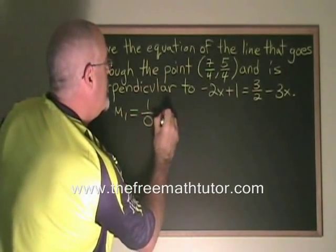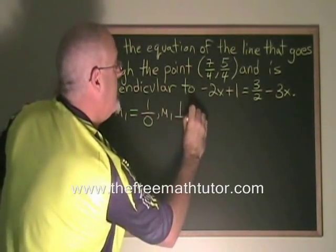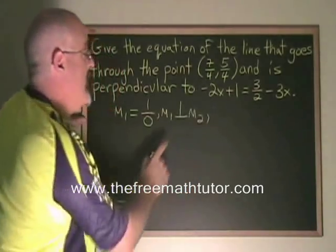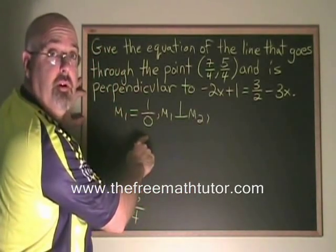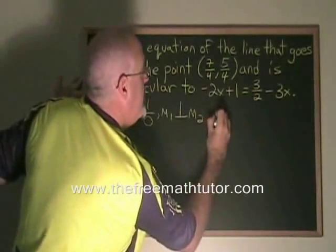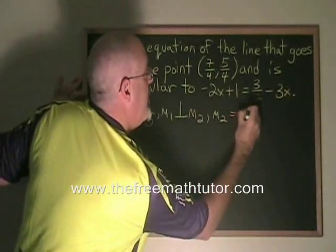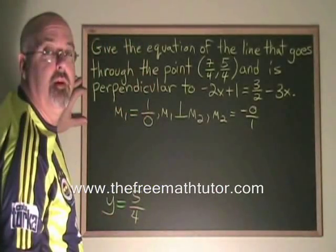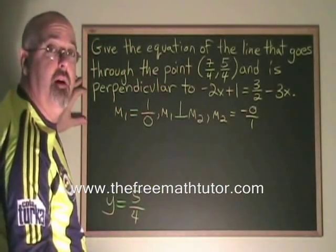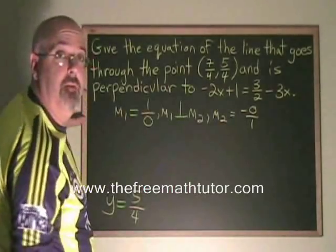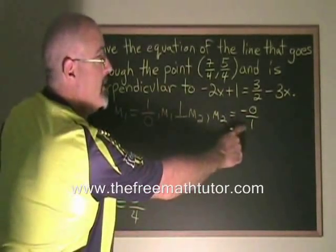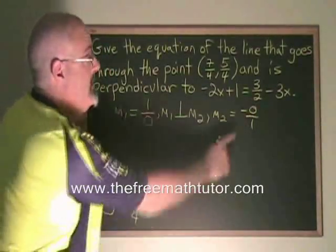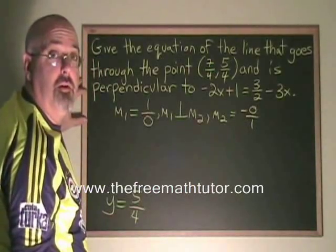And since m1 is perpendicular to m2, m2 will be the negative reciprocal of this fraction. It would be negative 0 over 1. So I found a way to show my work and justify the slope of the horizontal line, because this is equal to 0, and that is the slope of all horizontal lines.